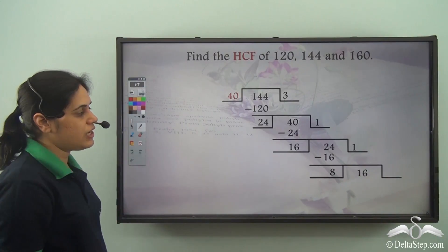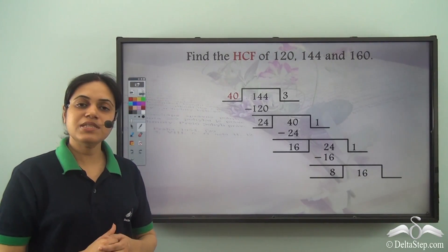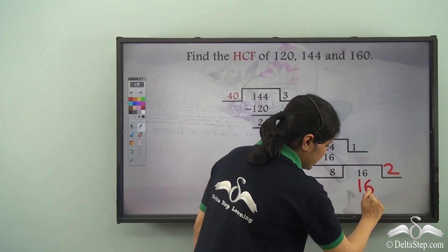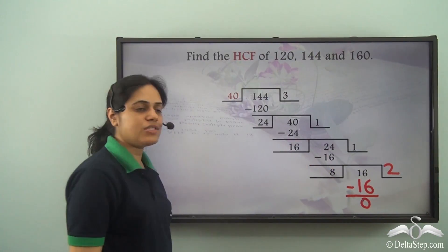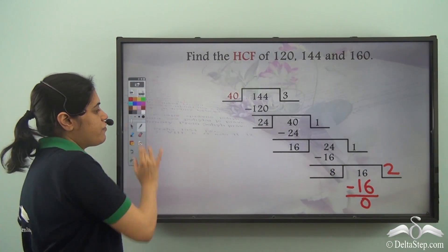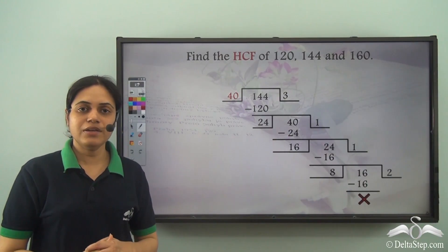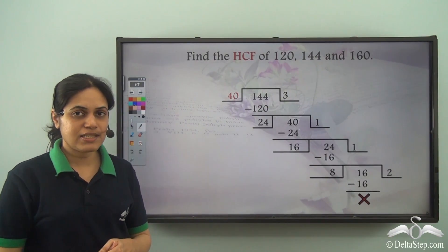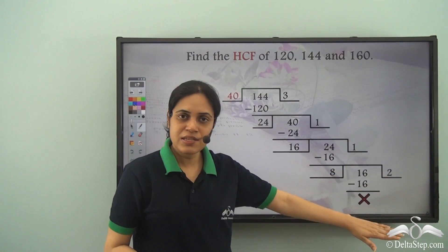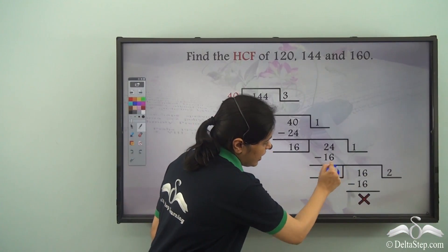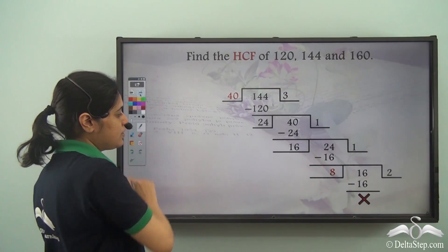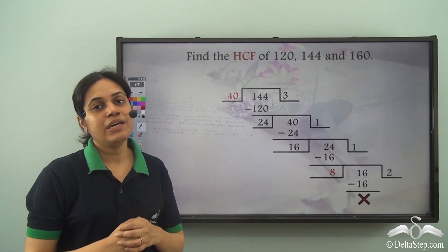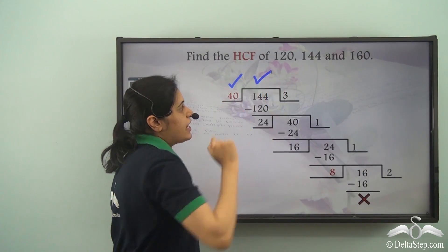So 8 will now divide 16. How many times does 8 go into 16? Two times. 8 into 2 is 16 and the remainder is 0. So finally I get 0 as the remainder. The HCF is the divisor of the last step — which is 8. So 8 is the HCF of 40 and 144.